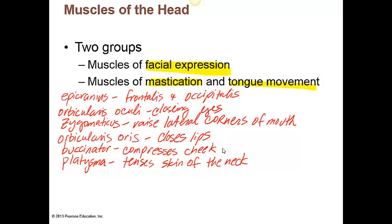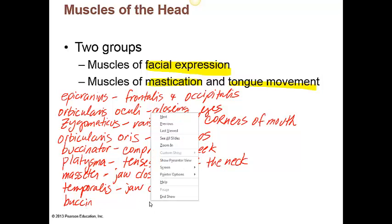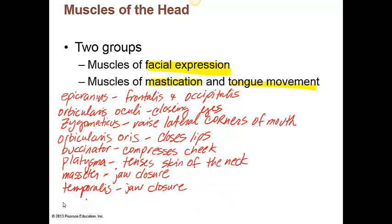Some other important muscles that you need to know are the masseter muscle — as we've already gone through, the masseter is important for jaw closure. Then we have the temporalis, which also works alongside the masseter and is important for jaw closure as well. A lot of these muscles are going to have the same function and work together.